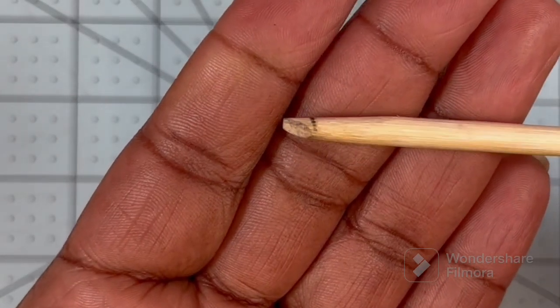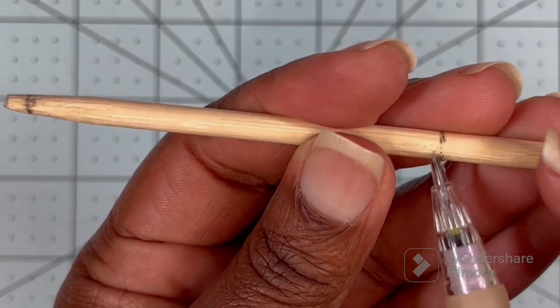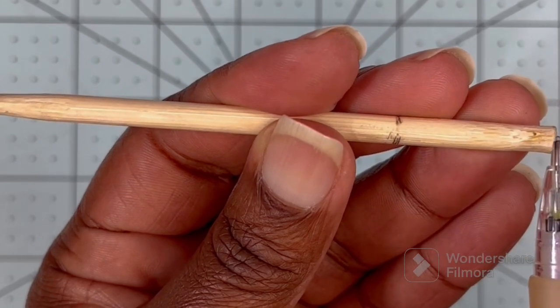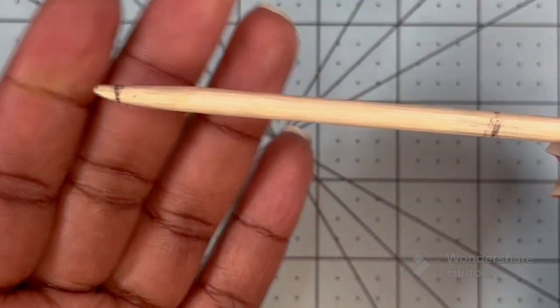So I have the mouthpiece shaped and I marked an inch from the end here and that is where the bell of the clarinet is going to be placed. So I'm going to sit this aside and start working on the bell.